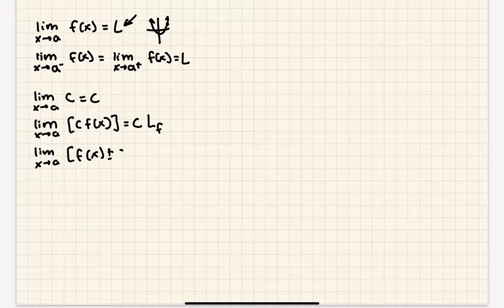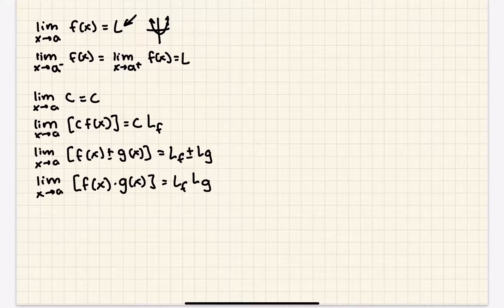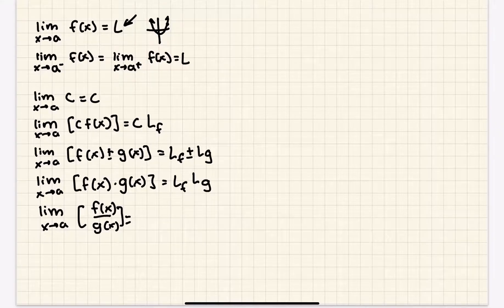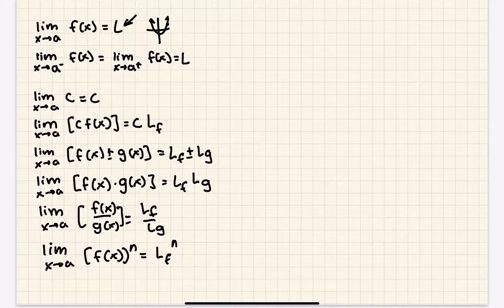When combining functions: if you add or subtract them, it's just Lf plus or minus Lg — you just add or subtract the limits. The limit as x approaches a of the product f(x) times g(x) equals Lf times Lg, just the product of the limits. The quotient is just the quotient of the limits. And the limit as x approaches a of f(x) to the power of n is just the limit to the power of n. These properties work on any algebraic function, like polynomials and rational functions.